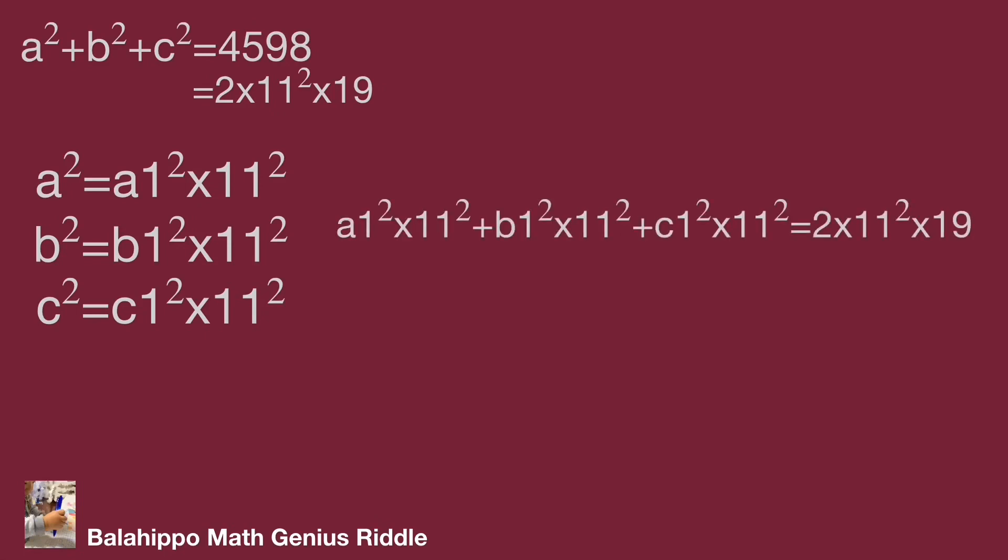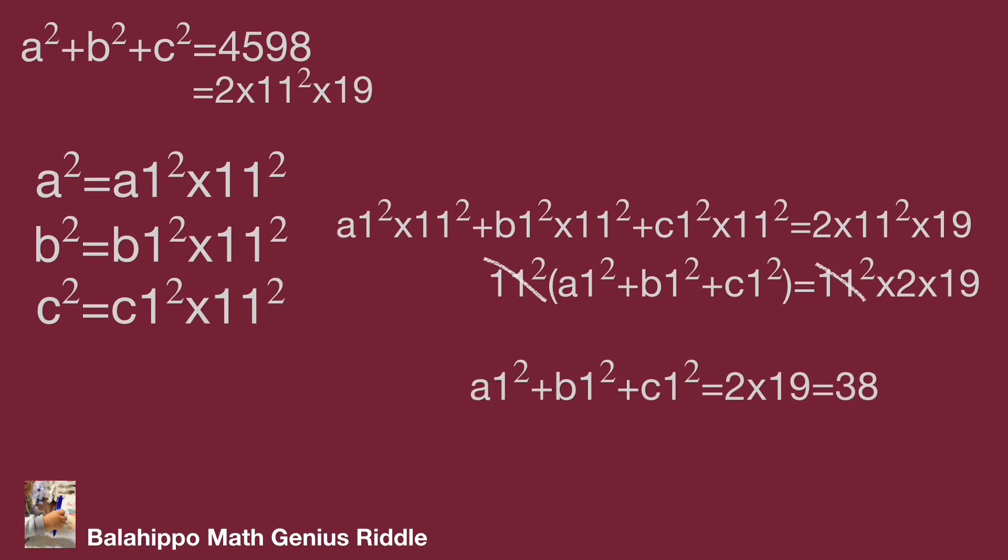Then substitute a, b, c with a1, b1, c1 equations. Simplify the equation. The equation becomes 11 squared multiply quantity a1 squared plus b1 squared plus c1 squared equal to 11 squared times 2 times 19. Then eliminate 11 squared both sides. The equation is a1 squared plus b1 squared plus c1 squared equal to 38.